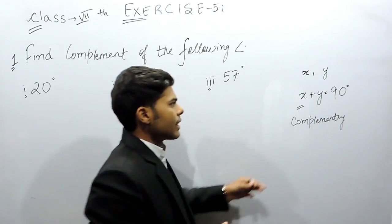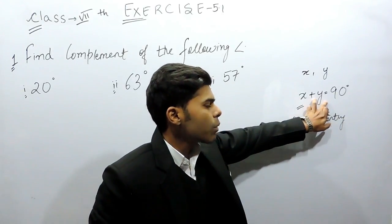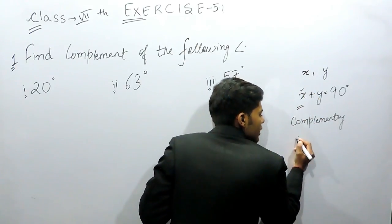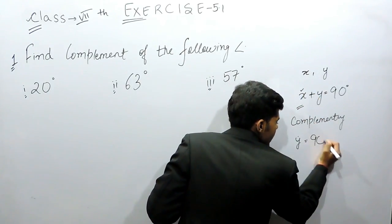In other words, we can say that if one angle is given to us, then the second angle will be equal to—suppose x is given, then y is equal to 90 minus x.